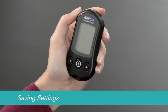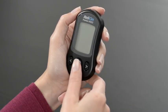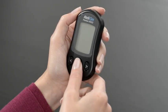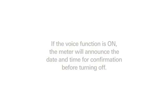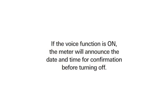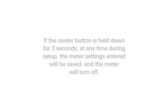Meter setup is now complete. Press and hold the center button for three seconds and the meter will save all of the settings and turn off. If the voice function is on, the meter will announce the date and time for confirmation before turning off. If the center button is held down for three seconds at any time during setup, the meter settings entered will be saved and the meter will turn off.